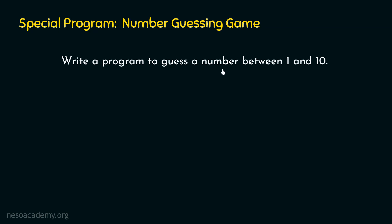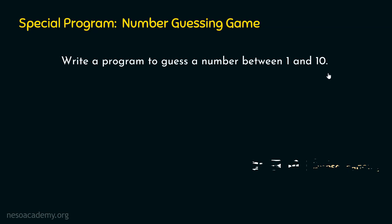Write a program to guess a number between 1 and 10. We need to create a number guessing game where we ask the user to guess a number between 1 and 10. The user will enter that number, and we will compare it with a number generated programmatically — a random number between 1 and 10.